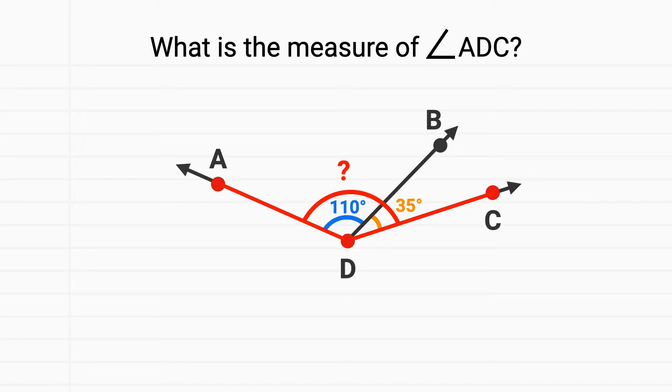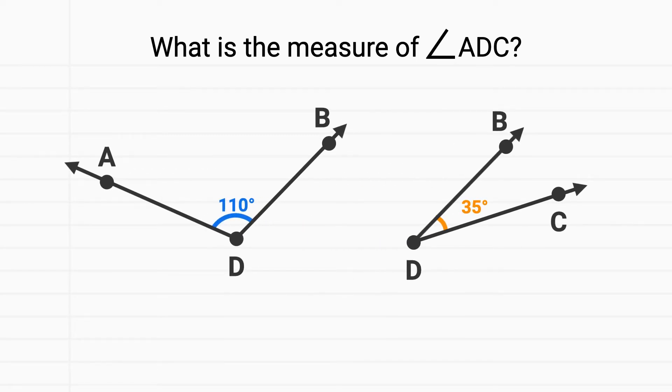But one way I could picture this angle is the entire angle if that line with point B wasn't there. Now another way I could think about this is angle ADC is made up of two separate angles. We have angle ADB in blue, which has a measure of 110 degrees.